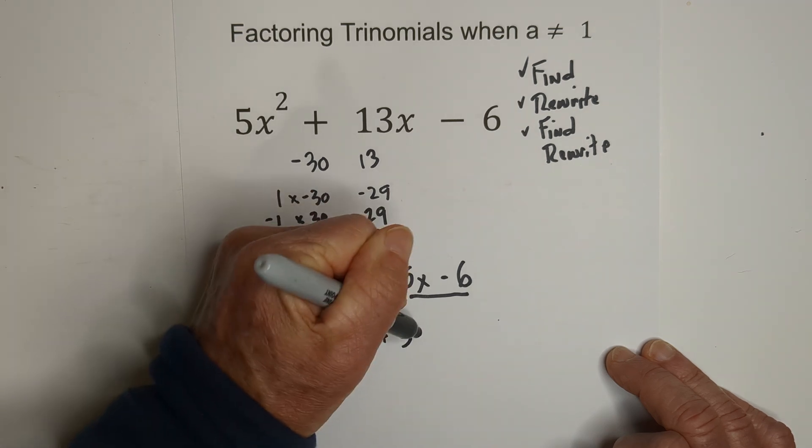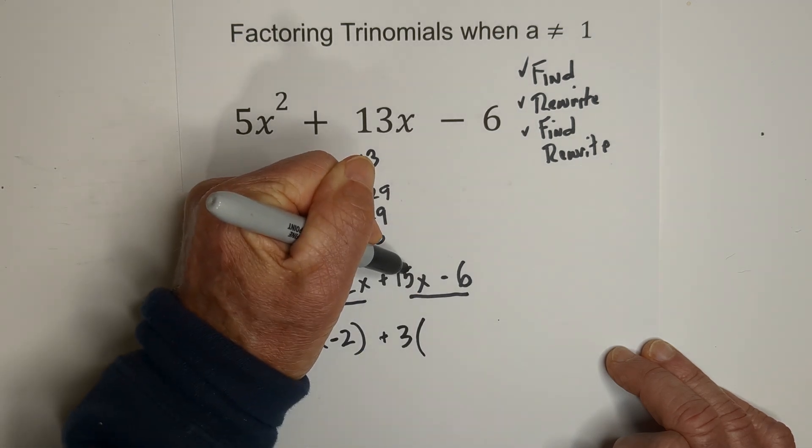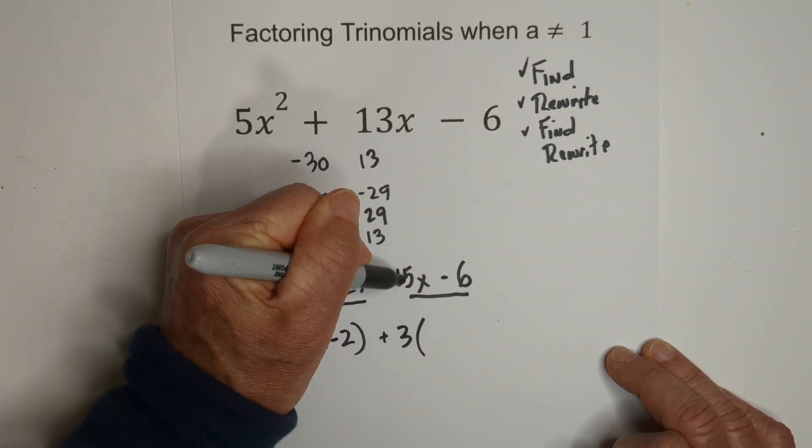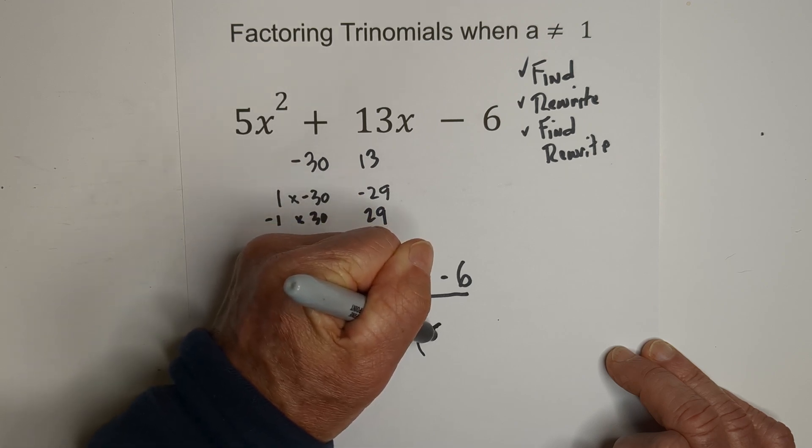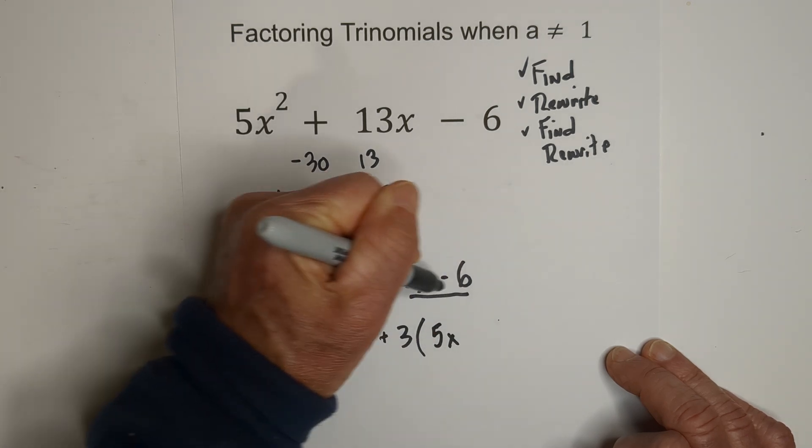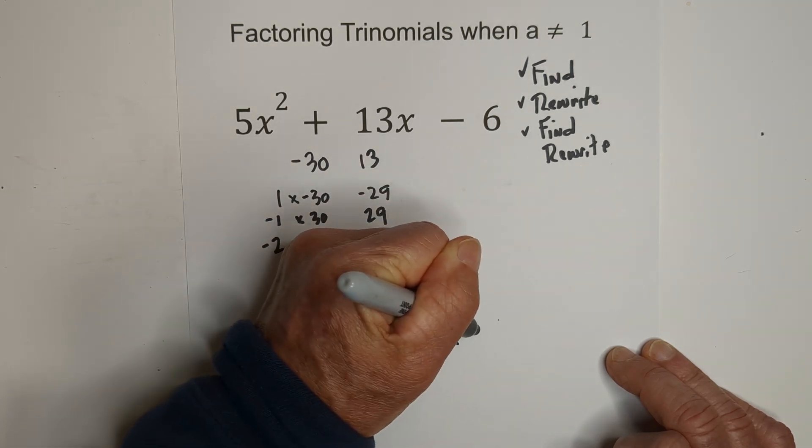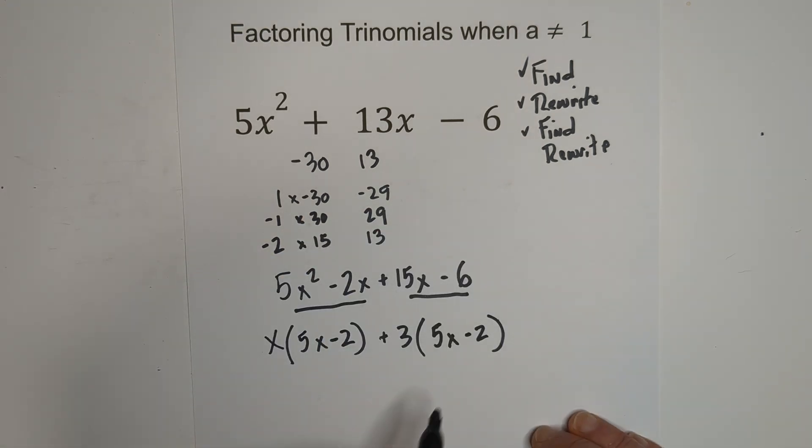And then we're going to find the same thing. We're going to find the greatest common factor of this binomial, and that looks like that is a 3. And so, when we factor that out, that becomes 3 goes into 15, 5 times, and then it goes into negative 6, 2 times. So now we have found the greatest common factor and factored it out.